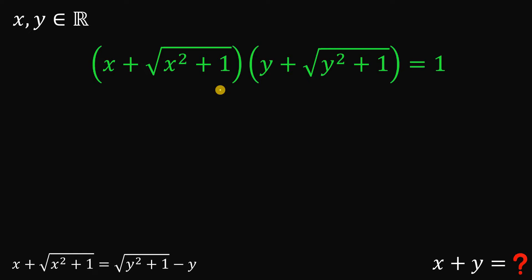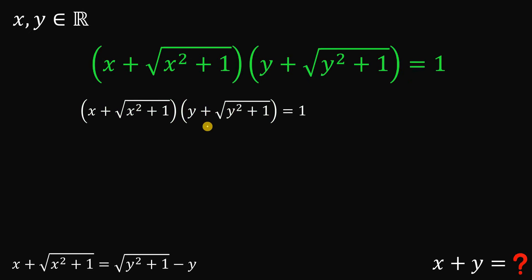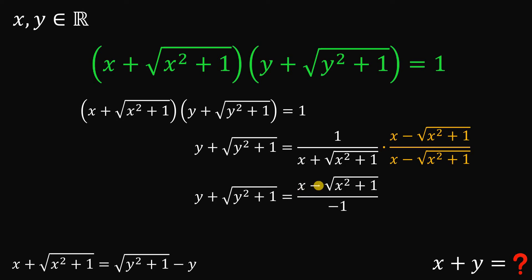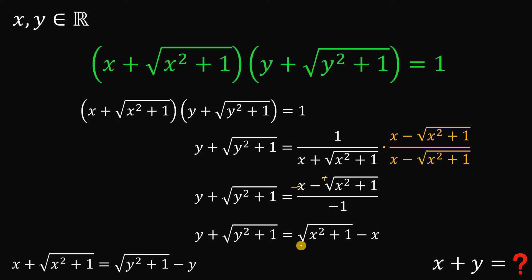Now let's set aside that result and go back to the original equation. Instead of dividing both sides by y plus square root of y squared plus 1, let's divide both sides by x plus square root of x squared plus 1. So we have y plus square root of y squared plus 1 equals 1 over x plus square root of x squared plus 1. We rationalize by multiplying by x minus square root of x squared plus 1. The numerator becomes x minus square root of x squared plus 1, and the denominator simplifies to negative 1. Interchanging the signs, y plus square root of y squared plus 1 equals square root of x squared plus 1 minus x.